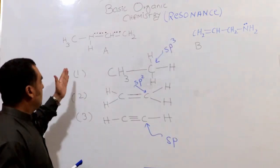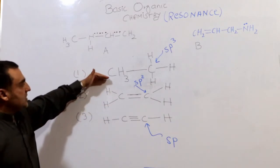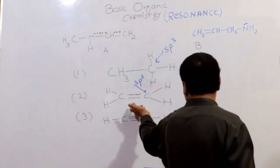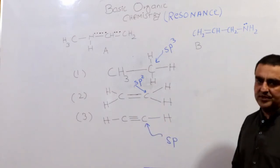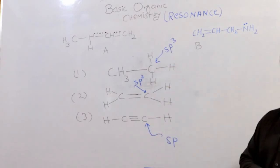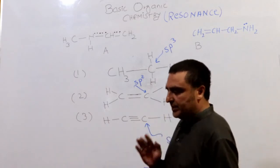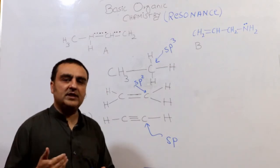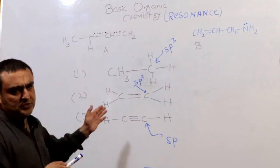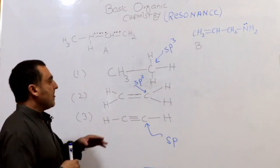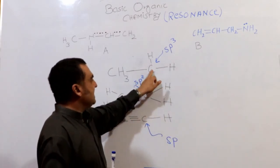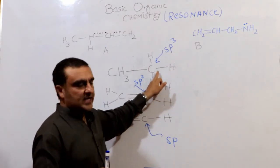Now look at three molecules: ethane (C–C single bond, sp³ carbon), ethene (C=C double bond, sp² carbon), and ethyne (C≡C triple bond, sp carbon). These examples help us understand electronegativity further. The bonds of interest are the C–H bonds — in ethane the bond involves sp³ carbon, in ethene sp² carbon, and in ethyne sp carbon and hydrogen.